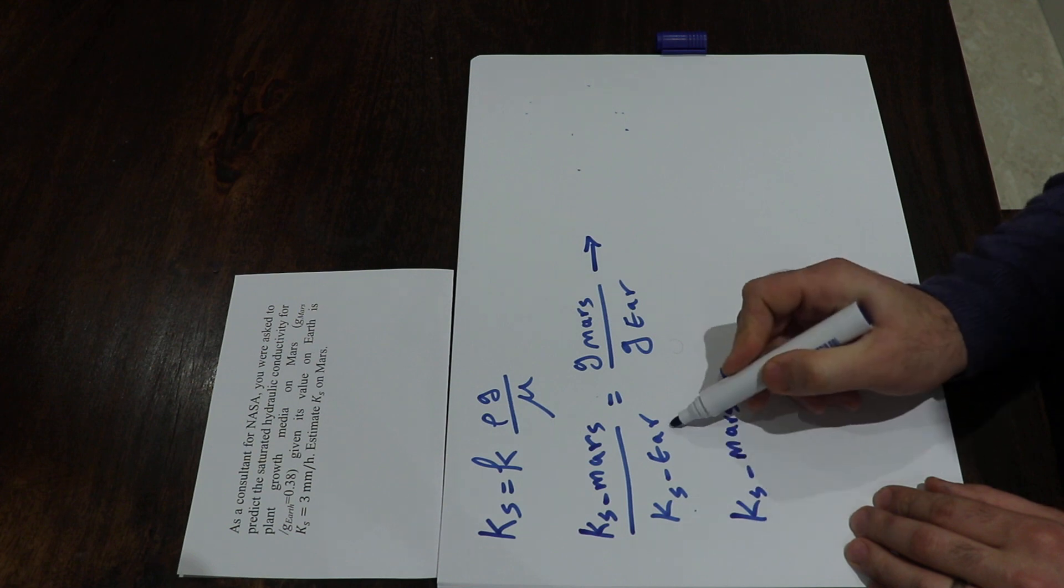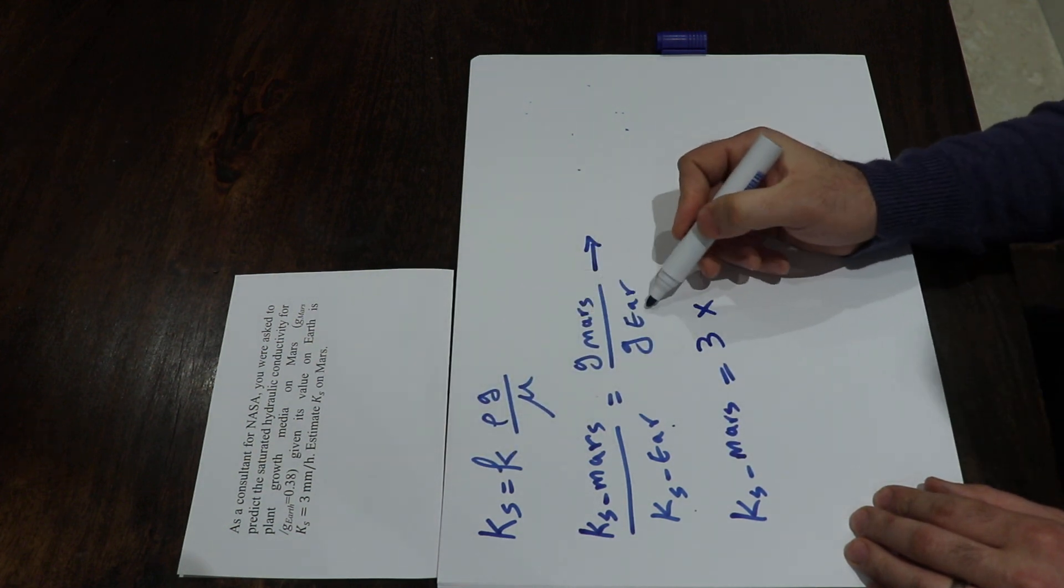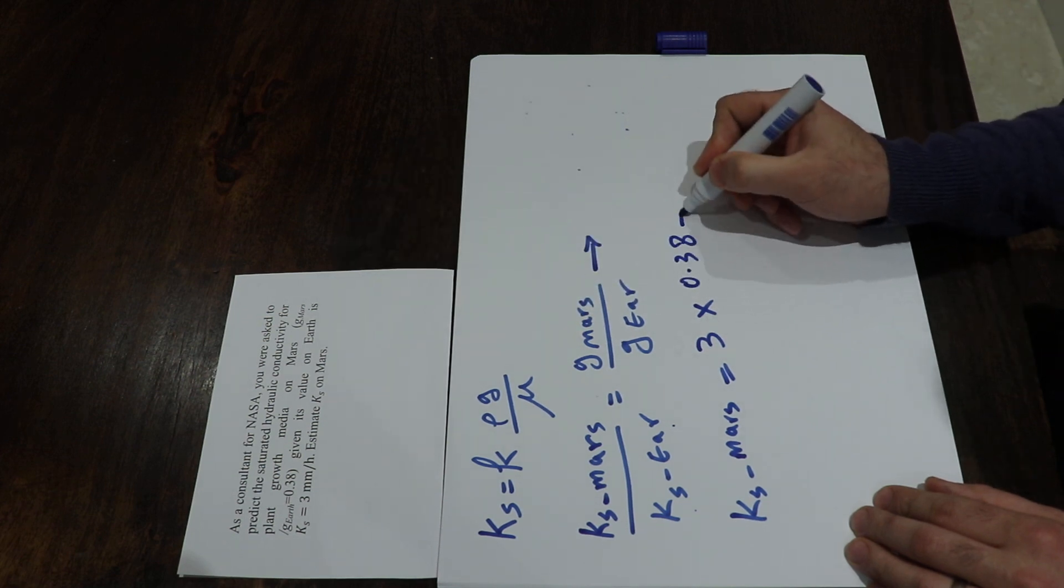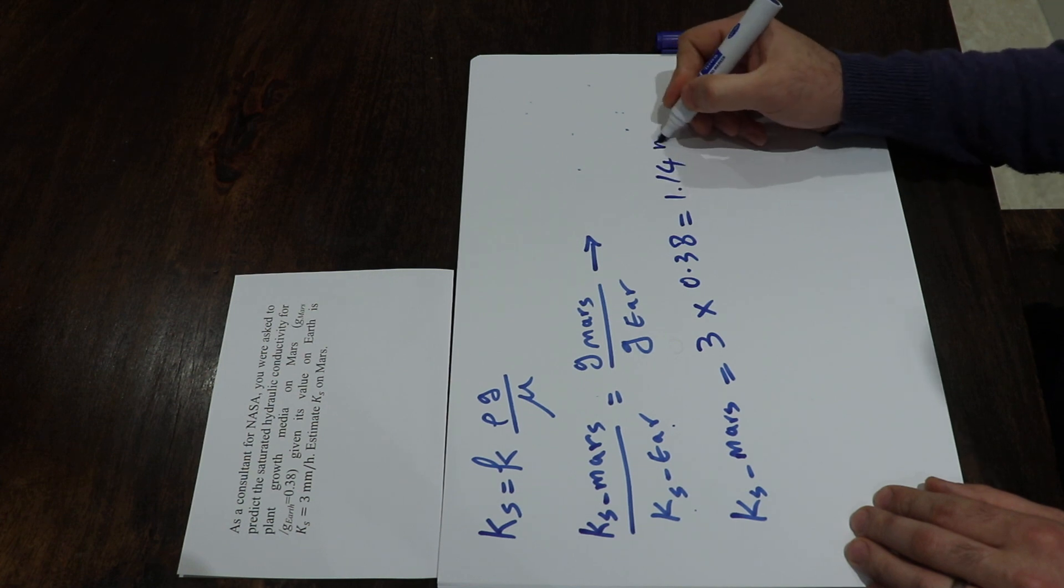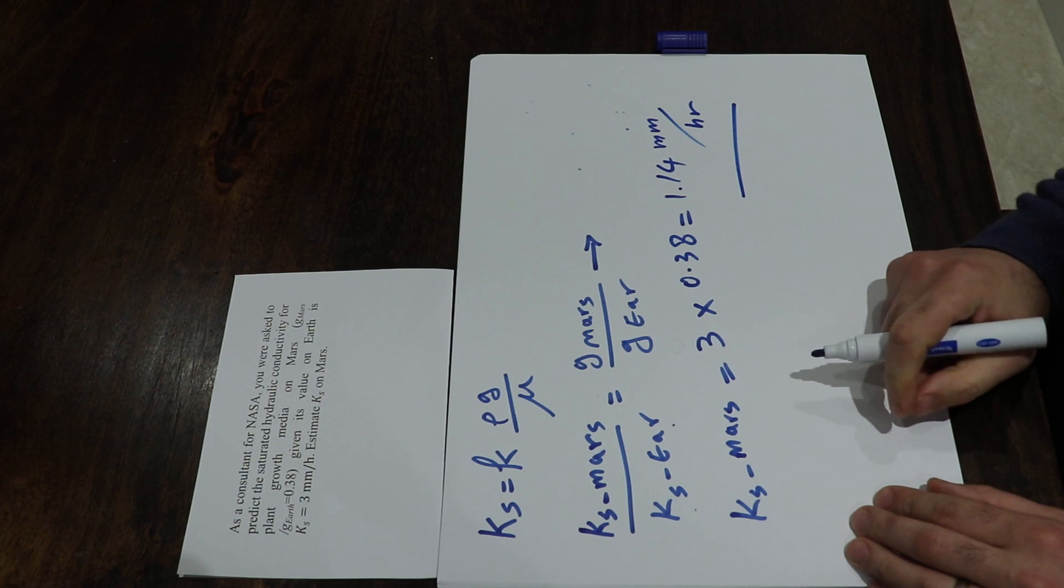That is given in the question: 3 times G Mars over G Earth, which is 0.38, which will be equal to 1.14 millimeters per hour. And that's the solution to this question.